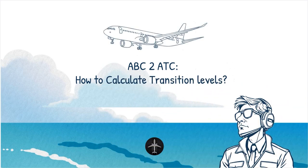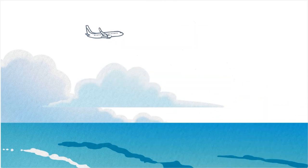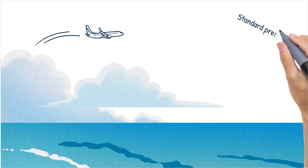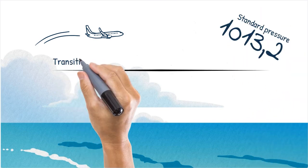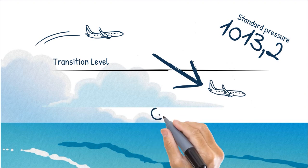How to calculate transition levels. Aircraft flying on cruising levels use the standard pressure setting of 1013.2 hectopascals in the altimeter. The pilots change from this to a local QNH value when passing the transition level.